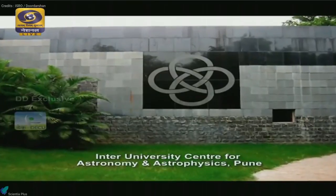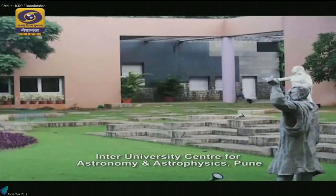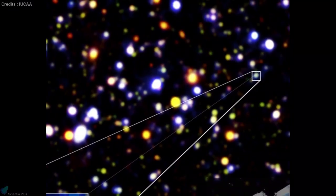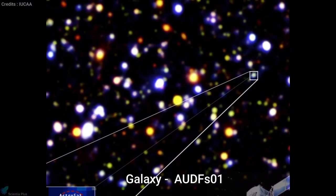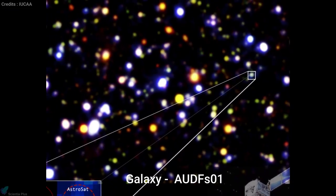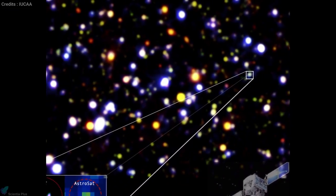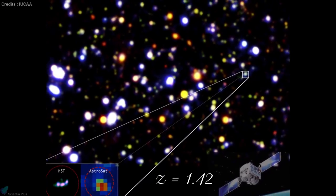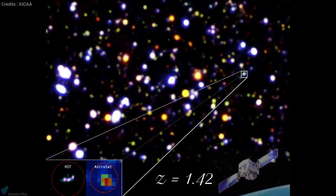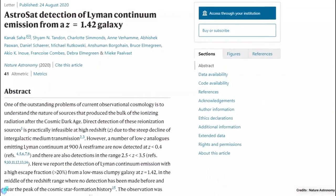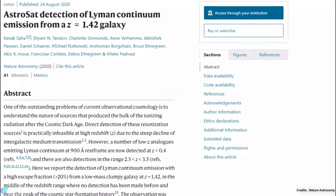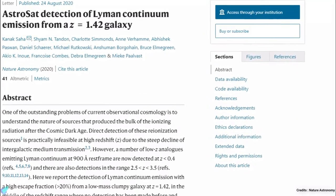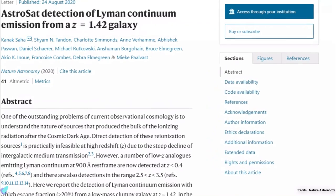A team of international astronomers, led by scientists from the Inter-University Center for Astronomy and Astrophysics, has discovered ultraviolet radiation emanating from a galaxy 9.3 billion light-years away from Earth. The radiation now detected has a redshift parameter of 1.42, which is too hard to detect with ground-based telescopes. The result was published in journal Nature Astronomy on 24th August 2020. I will provide the link to the research paper in the description if you are interested to learn in detail.